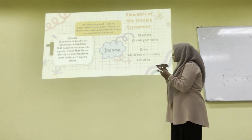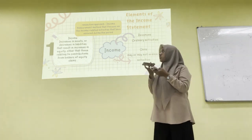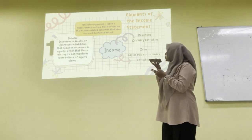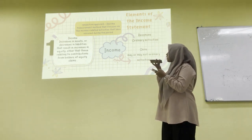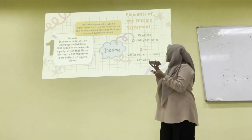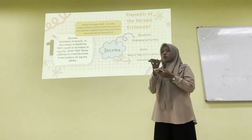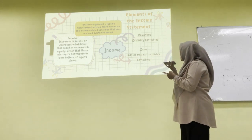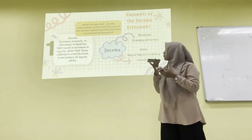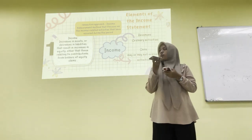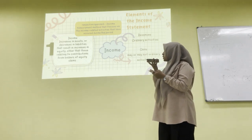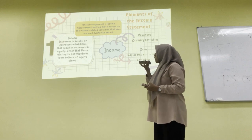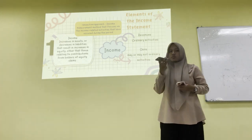The elements of the income statement are based on the transaction approach as the income measurement method, which focuses on income-related activities that have occurred during the period. The elements are divided into two major elements. The first one is income, which will be divided into two: revenues and gains. Income is increases in assets or decreases in liabilities that result in increases in equity, other than those relating to contributions from holders of equity claims.